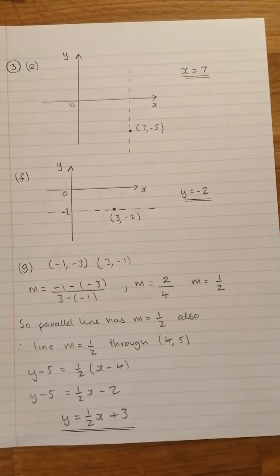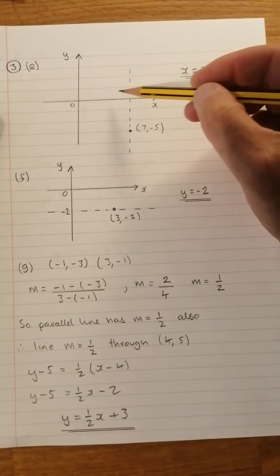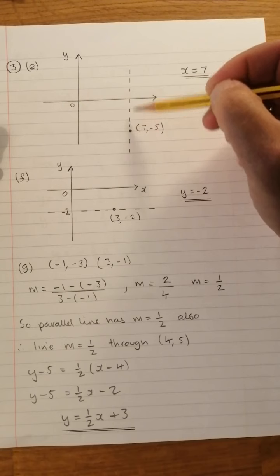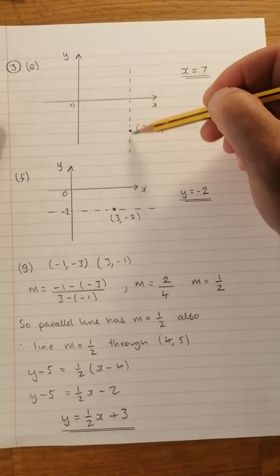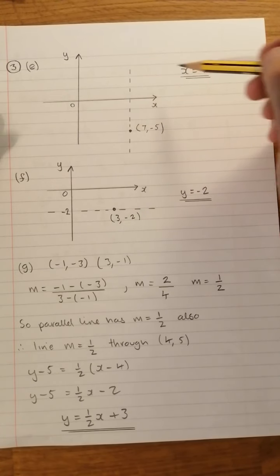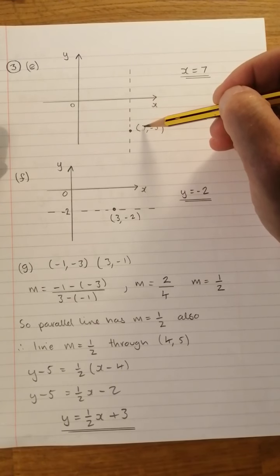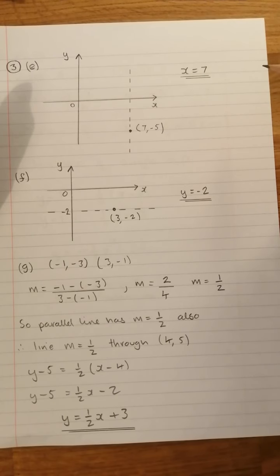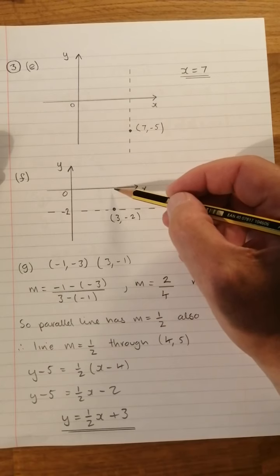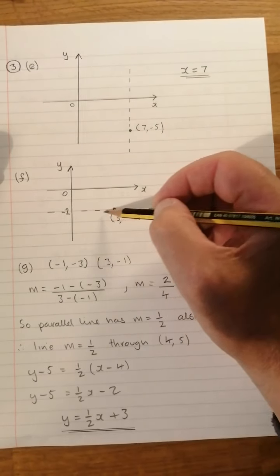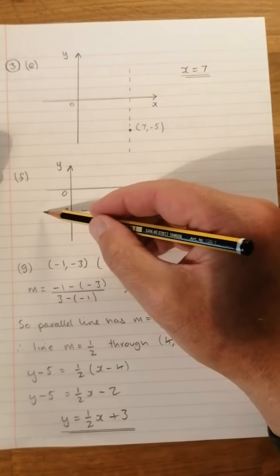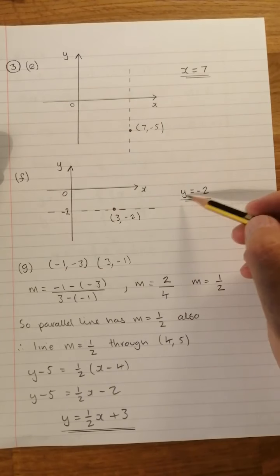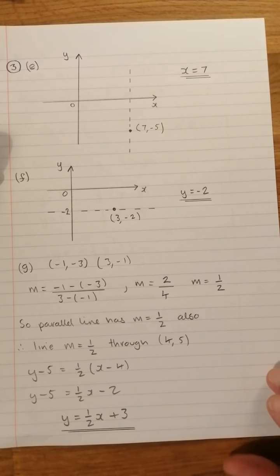For question E, they want the equation of the line going through (7, −5) which is perpendicular to the x-axis. That means it's going straight up and down — any vertical line has equation x equals its x-coordinate, so that line has equation x equals 7. For 3f, they want the line parallel to the x-axis going through (3, −2). Any line with gradient 0 has equation y equals its y-coordinate, so this is y equals minus 2.